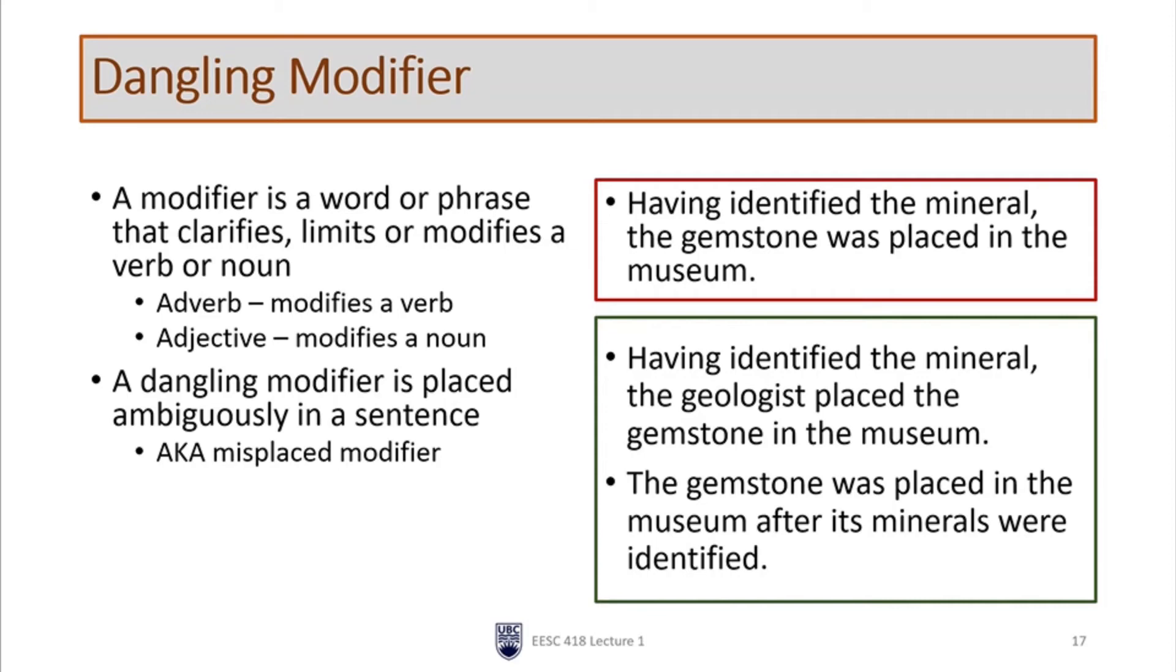But knowing how this works, you probably assumed that some geologist had identified the mineral and then placed the gemstone in the museum. So that's how we should write our sentence: Having identified the mineral, the geologist placed the gemstone in the museum. Or, the gemstone was placed in the museum after its minerals were identified. And you can see here that we're using the passive voice. We're going to talk a lot more about using active voice because that can also help get rid of dangling modifiers.